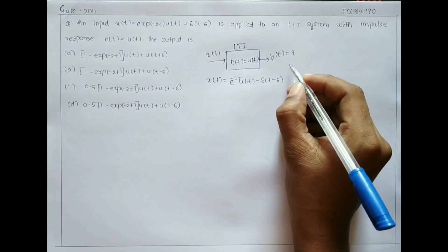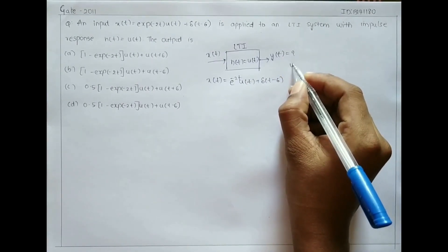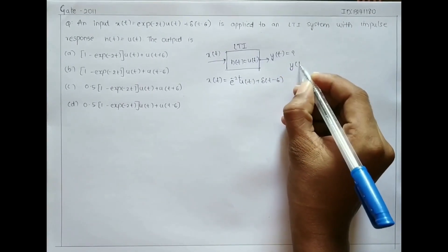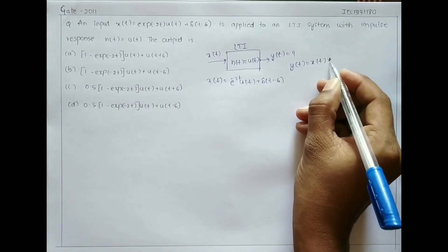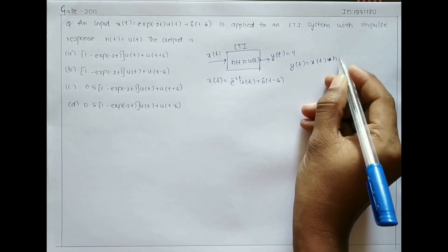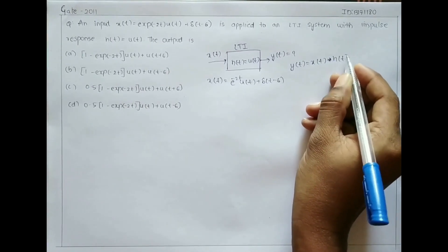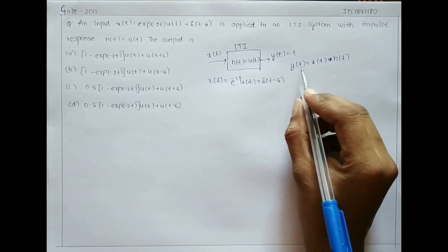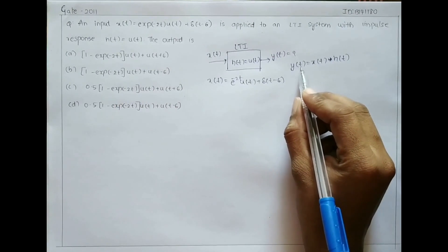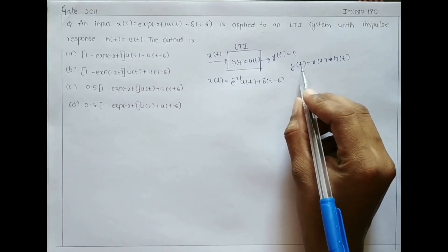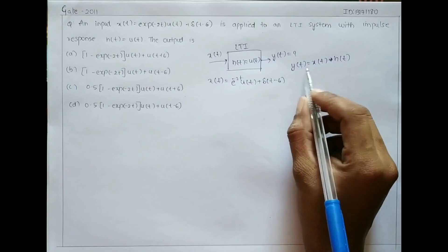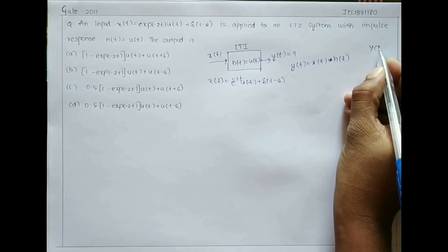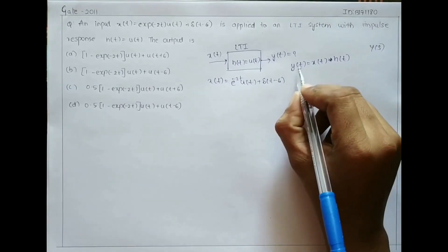We know that y(t) is nothing but x(t) convolved with h(t). In order to find y(t), first I am going to find Y(s), and then by applying the inverse Laplace transform to Y(s) I can get y(t).